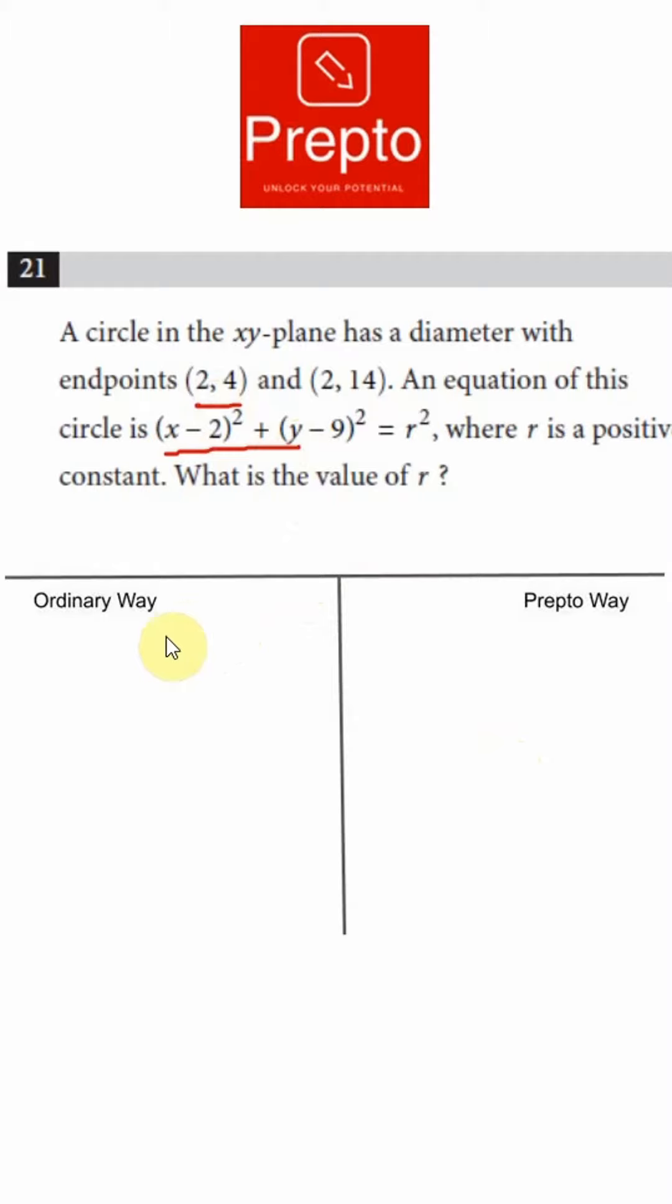In the ordinary way, what you would do is substitute one of the endpoints of the diameter into the equation because the equation is right there. It's so tempting. So you'll start by saying (2 minus 2) the whole square, substituting the point (2,4) into this equation plus (4 minus 9) the whole square equals r squared, and you'll first find r. So r is going to be 5.